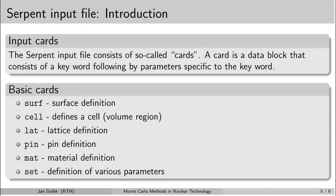Let me give you a brief overview of the general structure of the Serpent input file. Each command is called a card — terminology that has historical reasons and is also used in other codes like MCNP. Each card starts with a keyword, for instance the term 'surf'. After the keyword, a series of parameters follows, which are specific to the keyword. There may be one or many parameters, possibly spanning multiple lines.